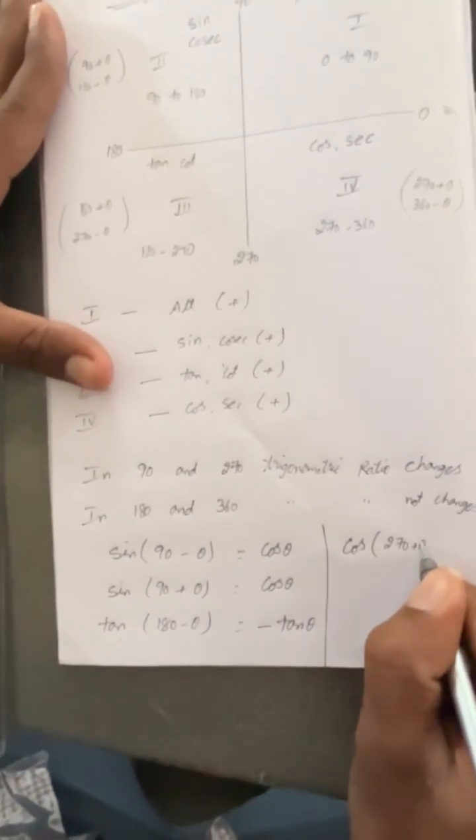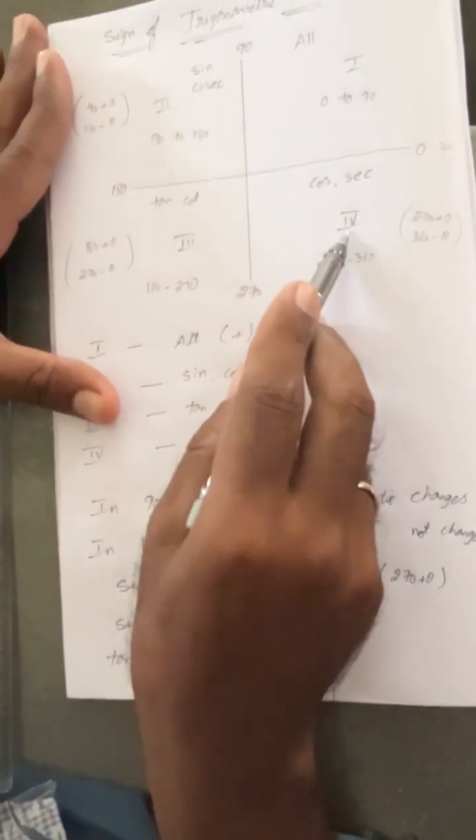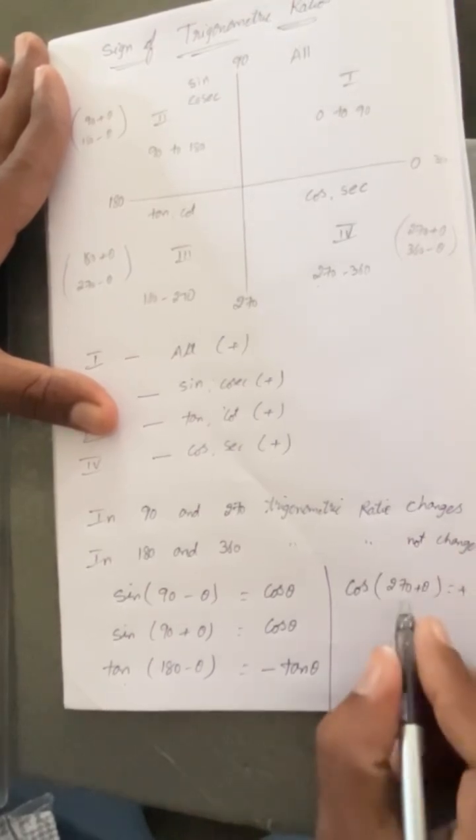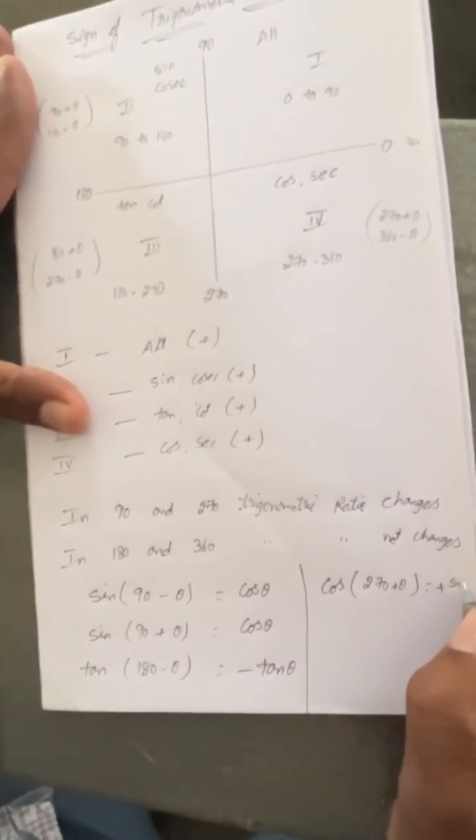It is another example: cos of 270 plus theta. 270 plus theta is fourth quadrant. Fourth quadrant cos is positive. 270 sin will change, so cos will become sin, sin theta.